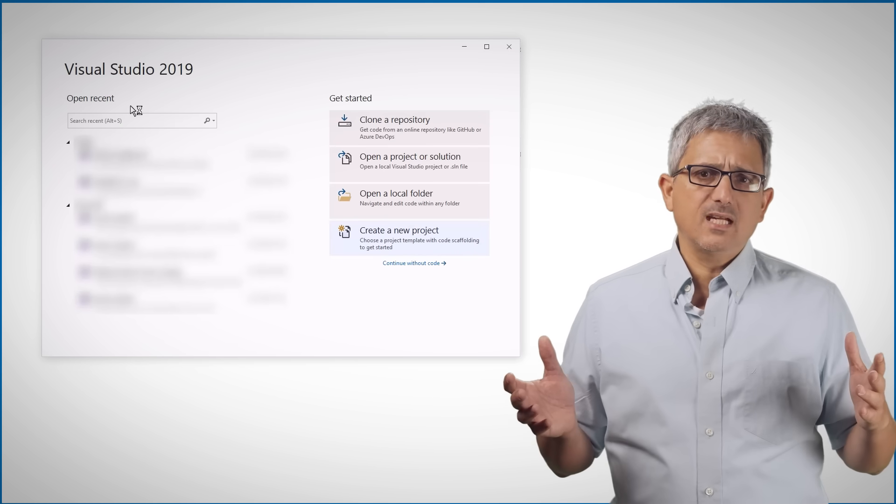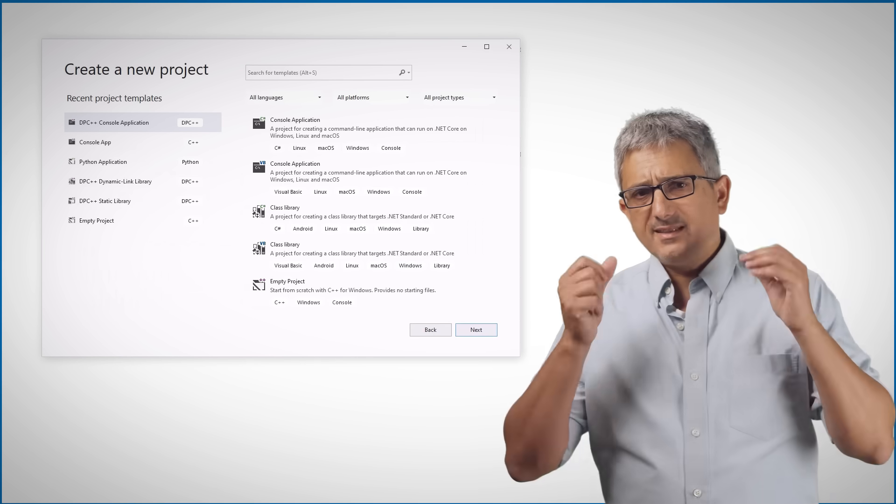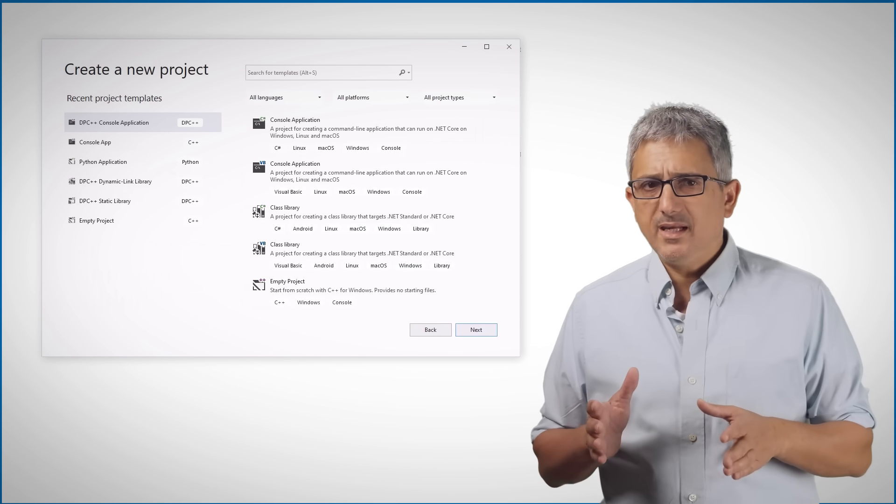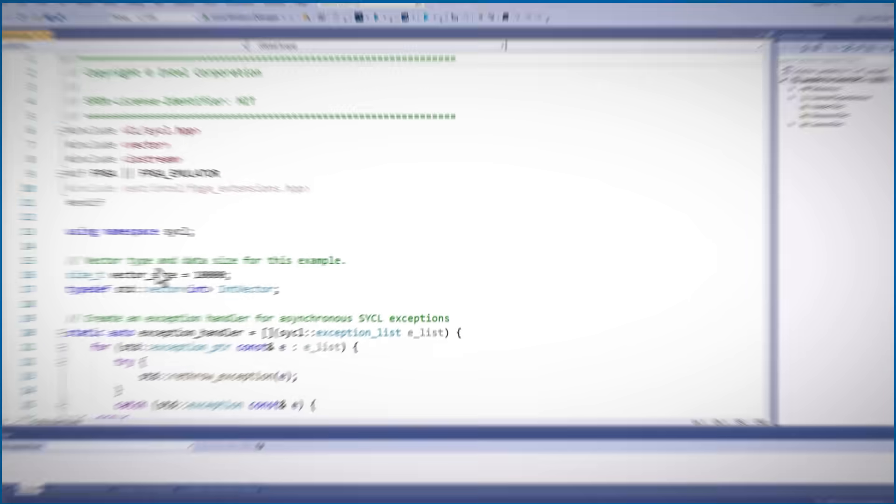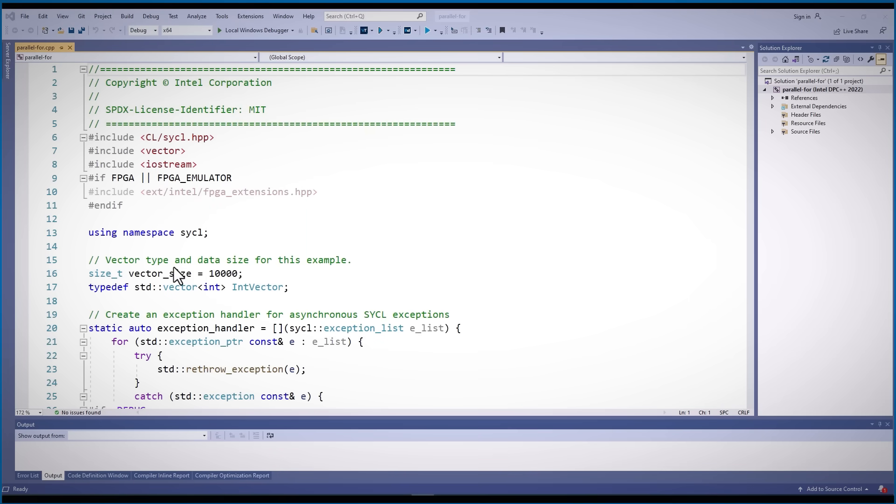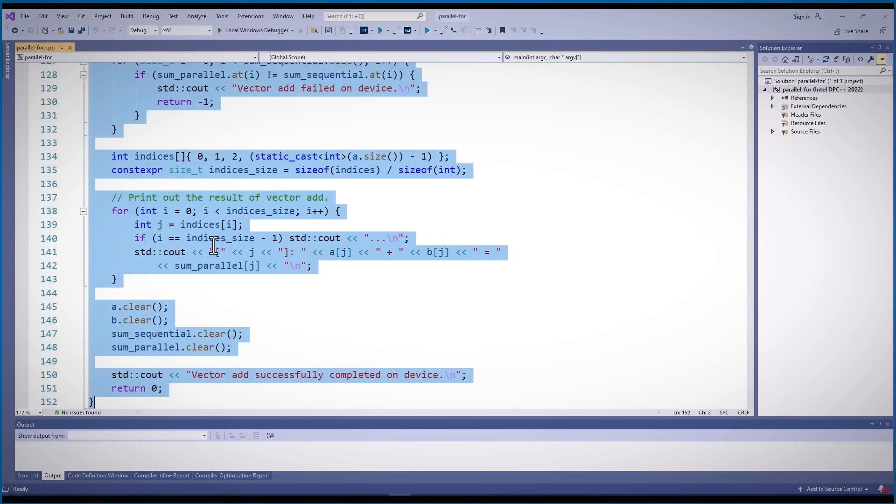There are many code examples online, but here is the simplest I can make it. I launch Visual Studio, open a new SYCL project. Now we have a working example, but I will remove it all and use my simplest code. I am using SYCL.